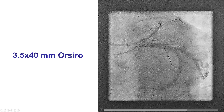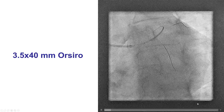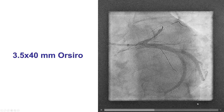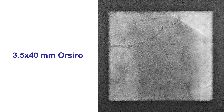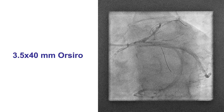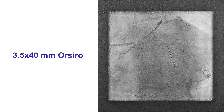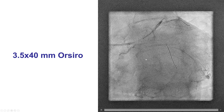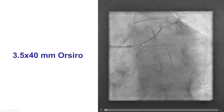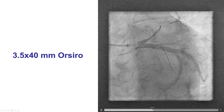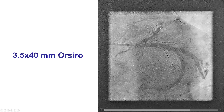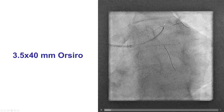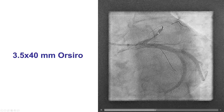We decided therefore to treat this with a primary stenting approach. We used a 3.5 by 40 millimeter Xience stent, with the intent to place it from the ostium of the LAD all the way to the mid-LAD, past the origin of the diagonal branch.